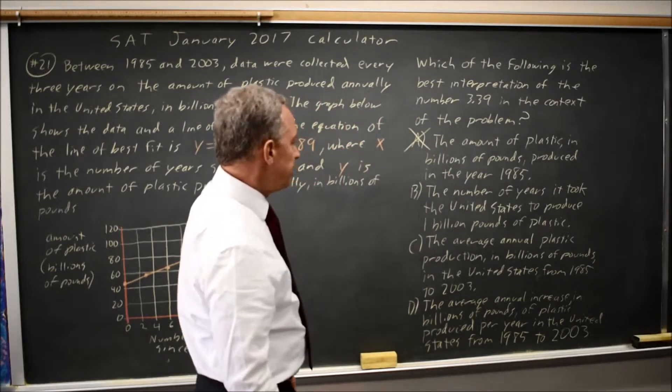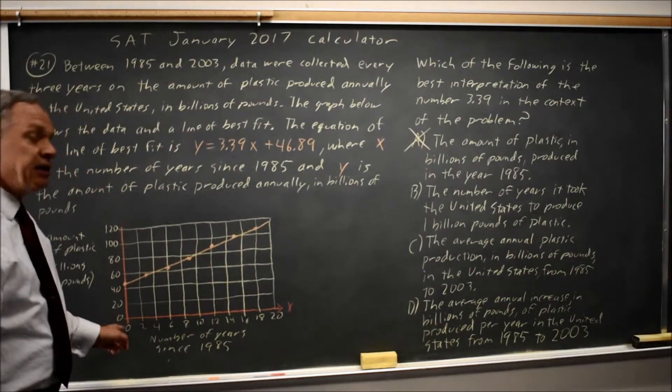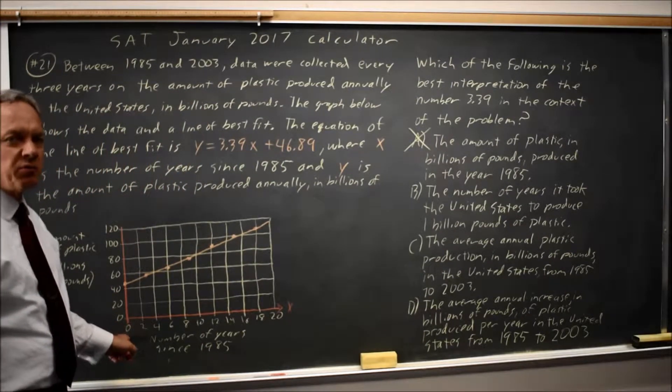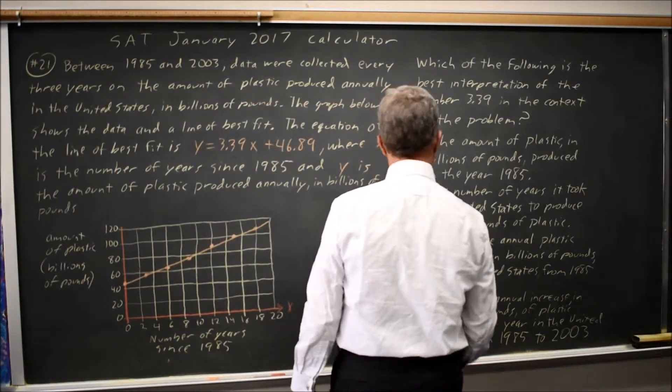Choice B, number of years it took the United States to produce one billion pounds of plastic. In this graph, we produce a billion pounds every year, so that would not be correct. We produce way over a billion pounds per year.